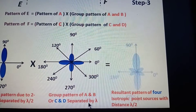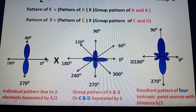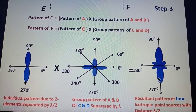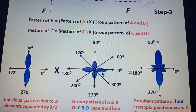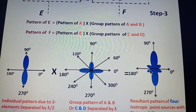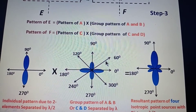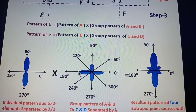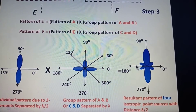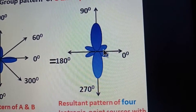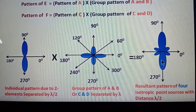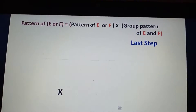Multiplying the individual pattern by the group pattern: maxima × maxima gives maxima; where there is a null in one and a maxima in the other, we get a null. There are six nulls total — at 60°, 120°, 240°, and 300° — represented as small minor lobes alongside the major lobes in the resultant pattern.